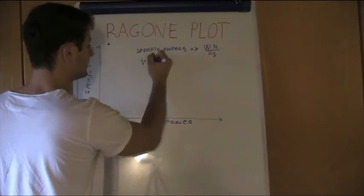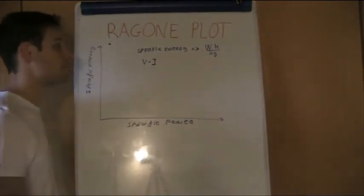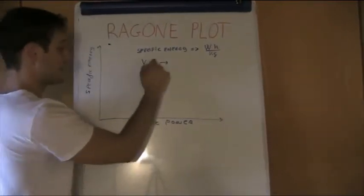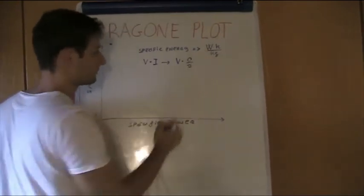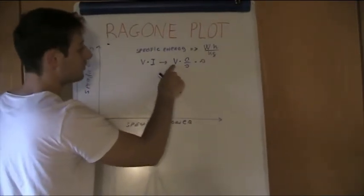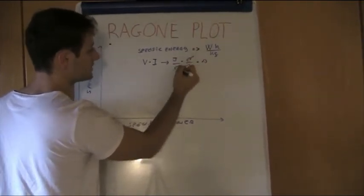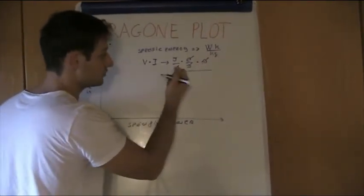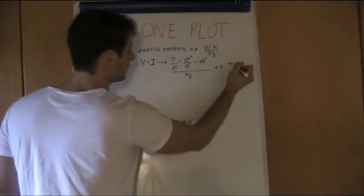We know that the watt is voltage times current — the unit of power. This means volts times amperes. But amperes are coulombs per second, and the volt is equal to joules per coulomb. So simplifying, we find that watt-hour per kilogram is equal to joules per kilogram. It's the same thing.